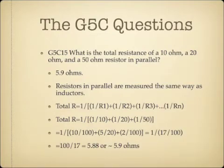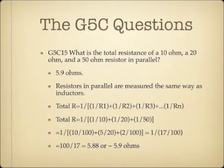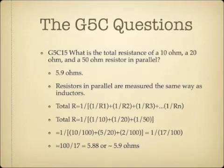What is the total resistance of a 10-ohm, a 20-ohm, and a 50-ohm resistor in parallel? The answer is 5.9 ohms. Using the parallel resistance formula: R-total equals 1 over the sum of 1/10 plus 1/20 plus 1/50. Finding the common denominator of 100 gives 10/100 plus 5/100 plus 2/100, totaling 17/100. So R-total equals 1 over 17/100, which is 100 divided by 17, equaling 5.88, or approximately 5.9 ohms.